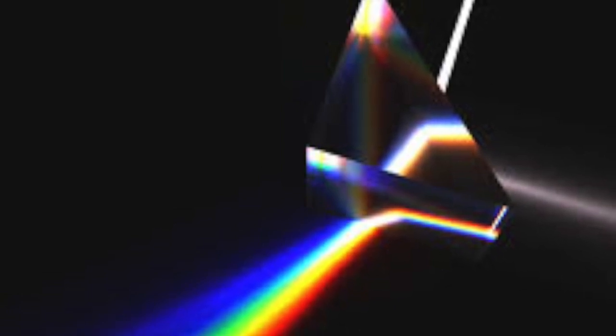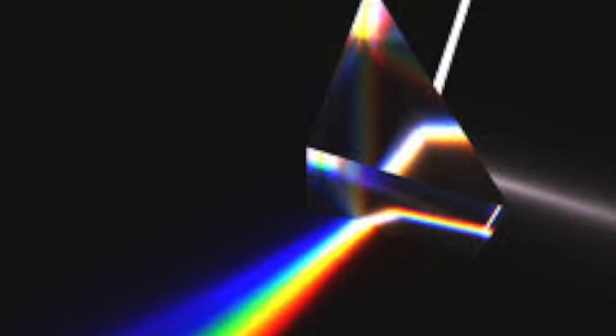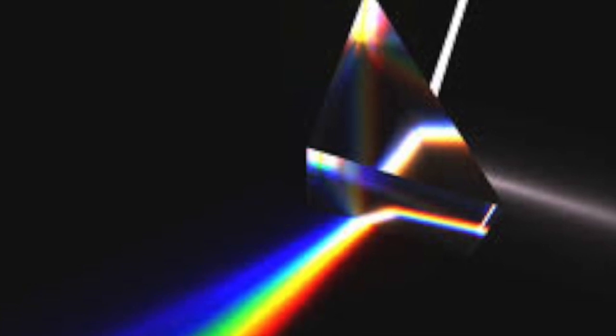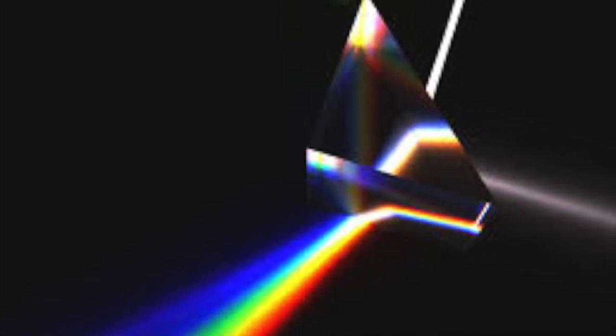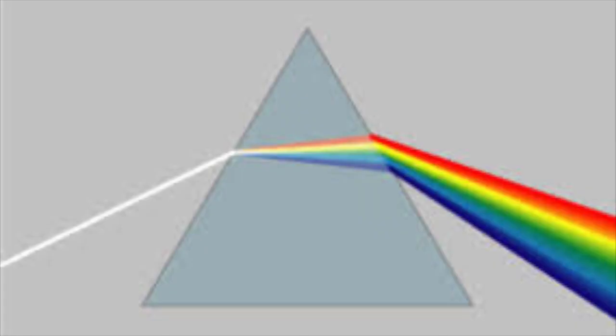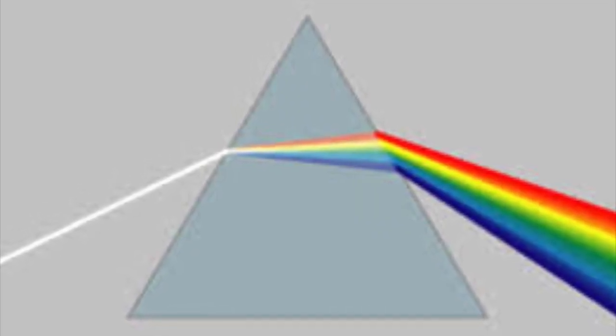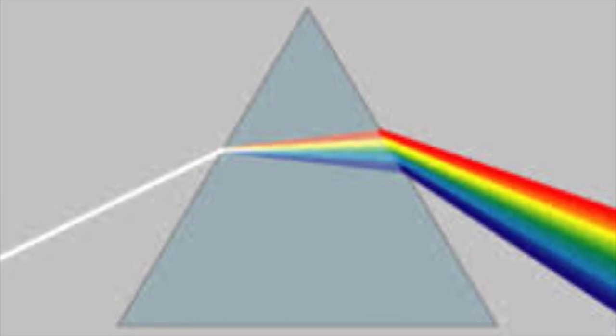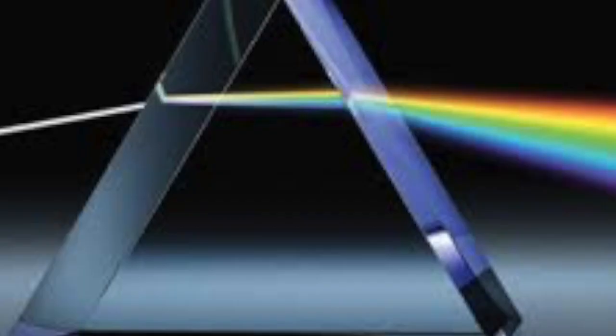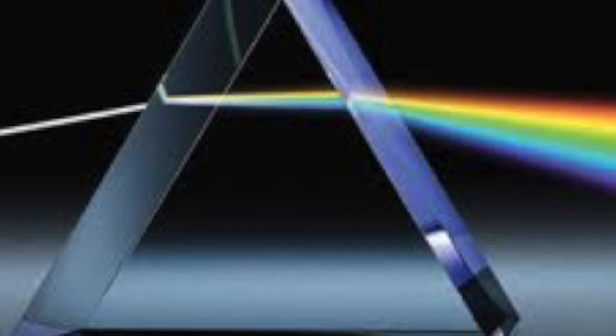This separation of the colors is known as dispersion. Once these colors are separated from white light, they can be distinguished in a rainbow.